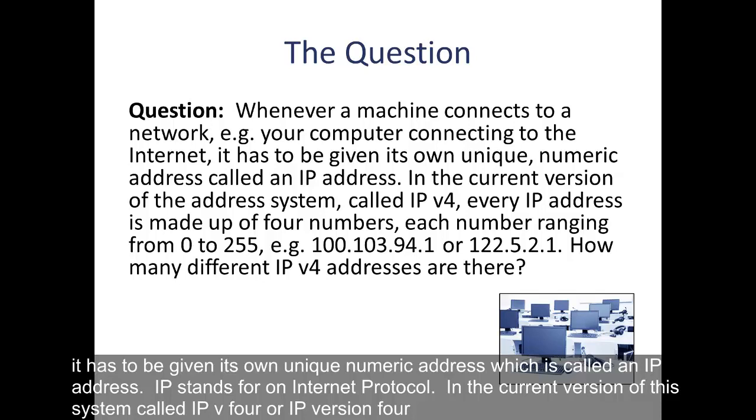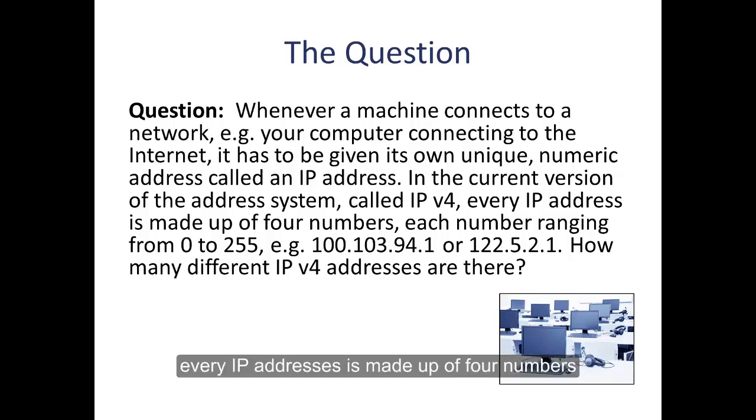In the current version of this system called IPv4, IP version 4, every IP address is made up of four numbers, each number ranging from 0 to 255. For example, 100.103.94.1 or 122.5.2.1. So the question here is, how many different IPv4 addresses are there?